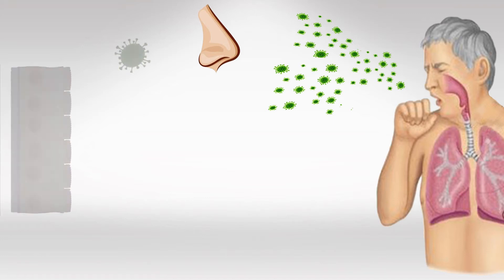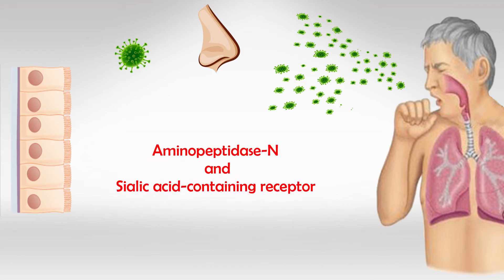The virus then travels all the way through our lungs till it reaches the mucociliary cells, and it uses these two proteins to enter the cell.